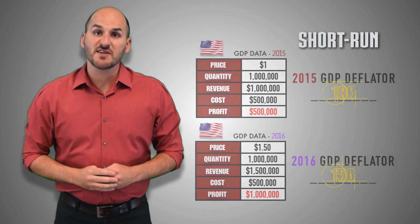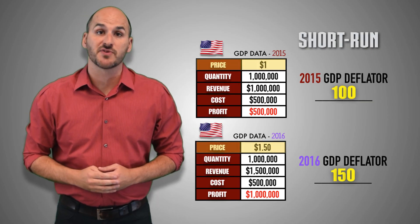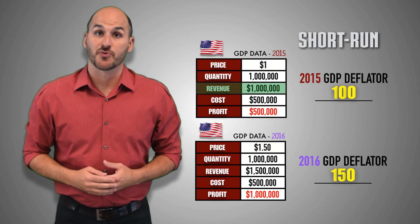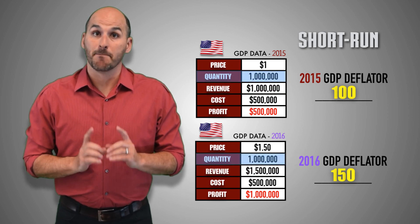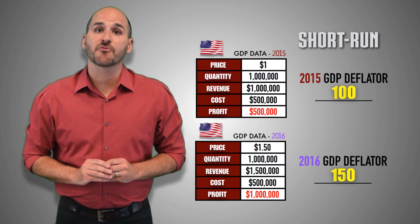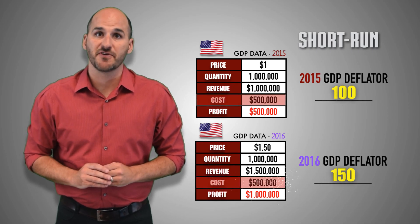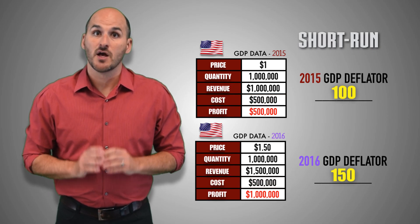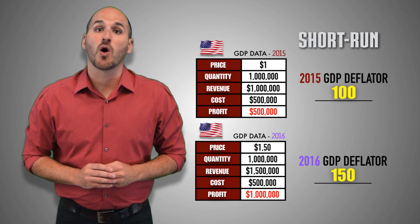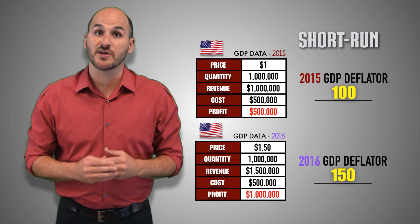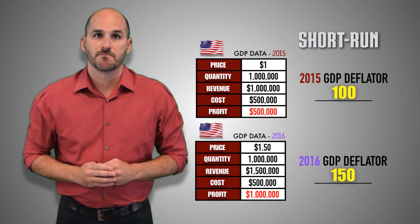For example, if prices increase by 50% in the United States economy between 2015 and 2016, revenues will increase by 50%, even if the same quantity of goods and services are produced and sold. But in the short-run, wages are fixed and remain the same, meaning costs will not change between 2015 and 2016. This means that in the short-run, domestic firms have a profit motive to supply a greater quantity of real GDP output as prices increase, and a lesser quantity of real GDP output when prices decrease.